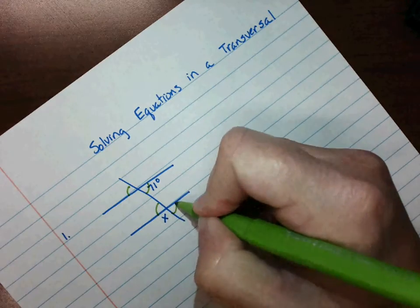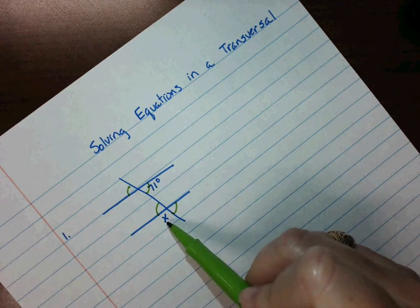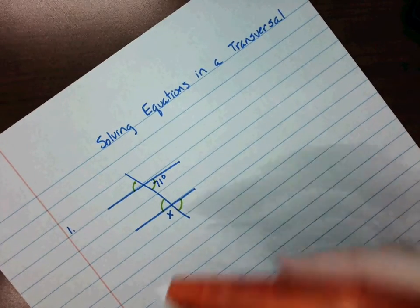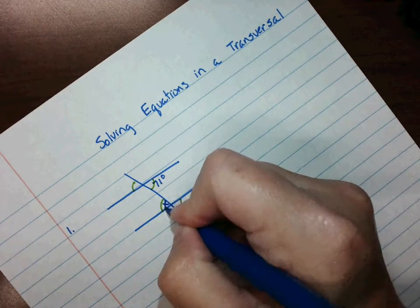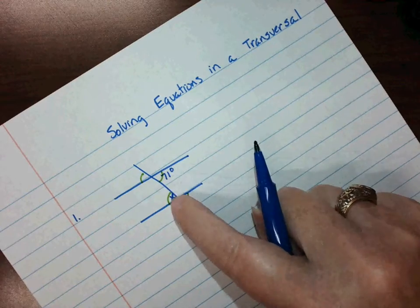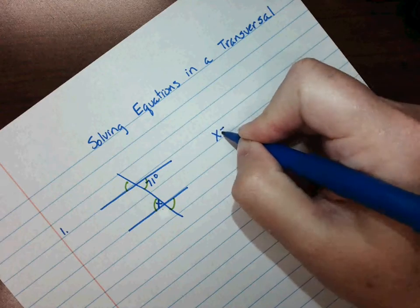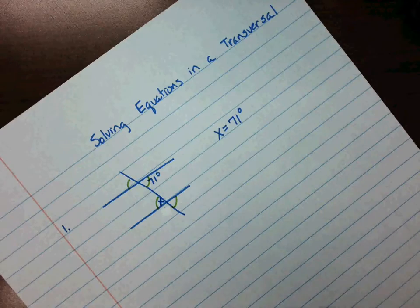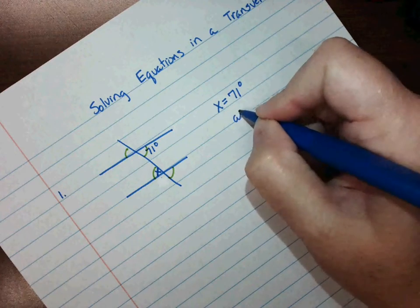If you remember, we've been doing this by making arcs. So if I go from left to right and make an arc, I can see that the 71 degrees and the X—oops, I put the X in the wrong place, sorry about that, the X should go right here—I can see that the 71 degrees and the X both have arcs on them. So that means that X is the same as the other angle, it's 71 degrees. They're the same. And if we wanted to get even more technical, we could say that they're alternate interior angles.